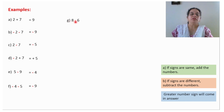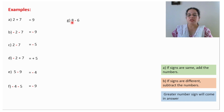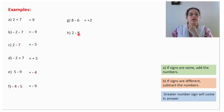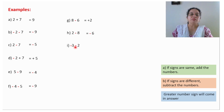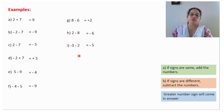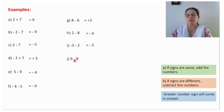Signs are different, subtract the number — 8 minus 6 will give you 2 — greater number sign will come in the answer; there is no sign, it means positive, so the answer will be positive 2. Signs are different, subtract the number — 8 minus 2 will give you 6 — greater number sign will come in the answer, so the answer will be minus 6. Signs are same, add the number — 3 plus 2 will give you 5 — greater number sign will come in the answer, so the answer will be minus 5. Signs are different, subtract the number — 8 minus 6 will give you 2 — greater number sign will come in the answer, so the answer will be minus 2.